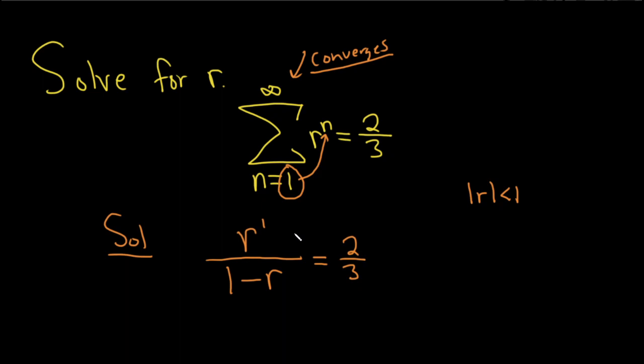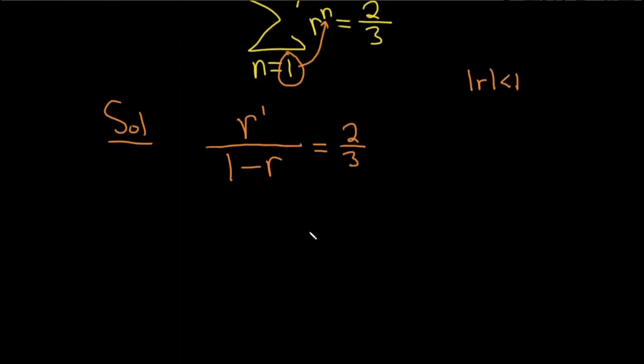So now we just have to solve for r. So I'm thinking maybe we can multiply both sides by 1 minus r, then multiply here by 1 minus r. These cancel. This is r equals 2 thirds times 1 minus r.